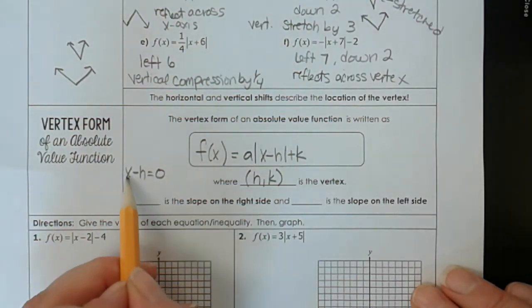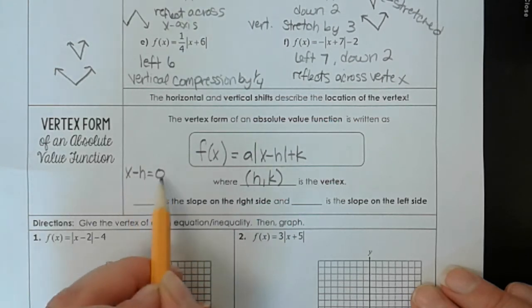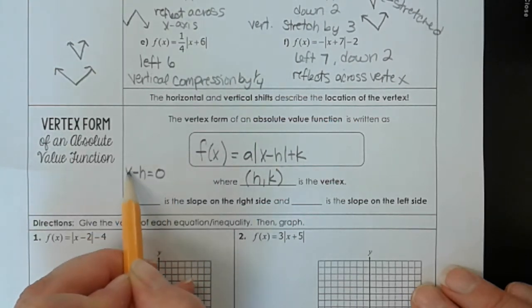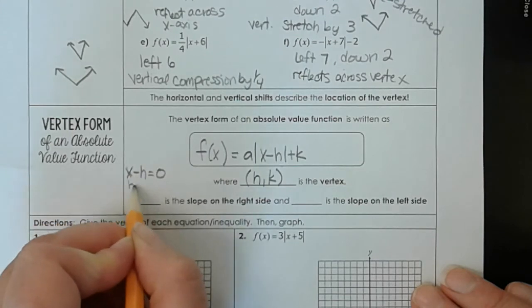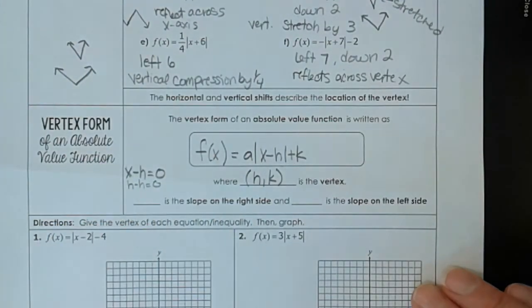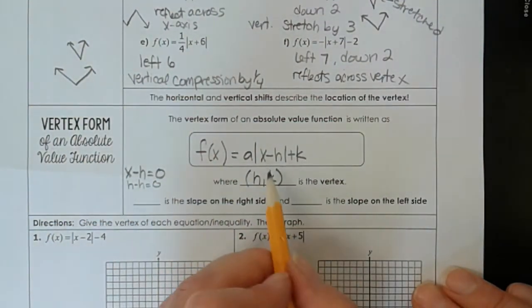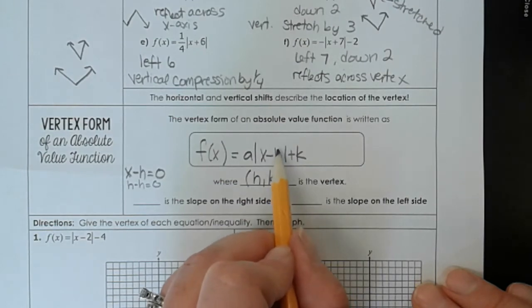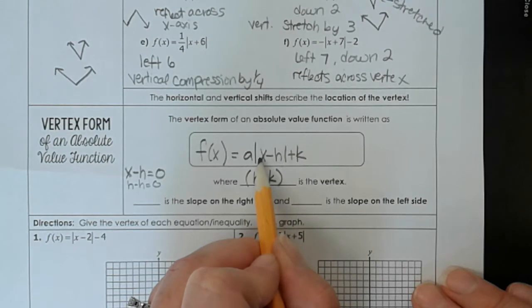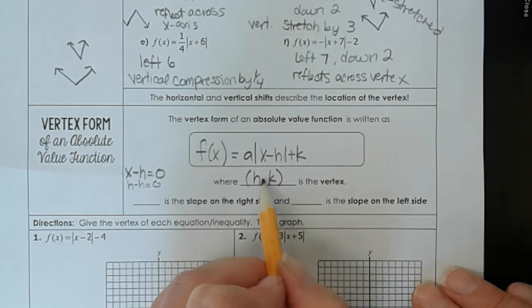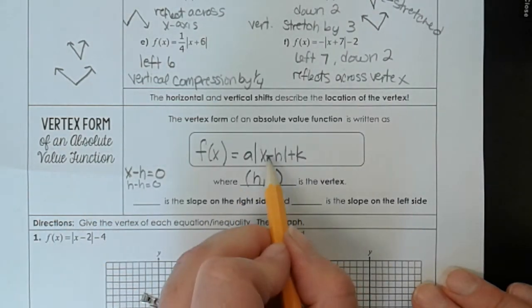Well, what does x have to be for this to become zero? Well, x has to be h. This has to be h minus h to get zero. So we know that whatever number is here, if we take that and we put it in for x, we're going to end up with zero inside the absolute values. So the x value of your vertex is h. Now think about this. If we put h in right here, we get h minus h, which is zero.